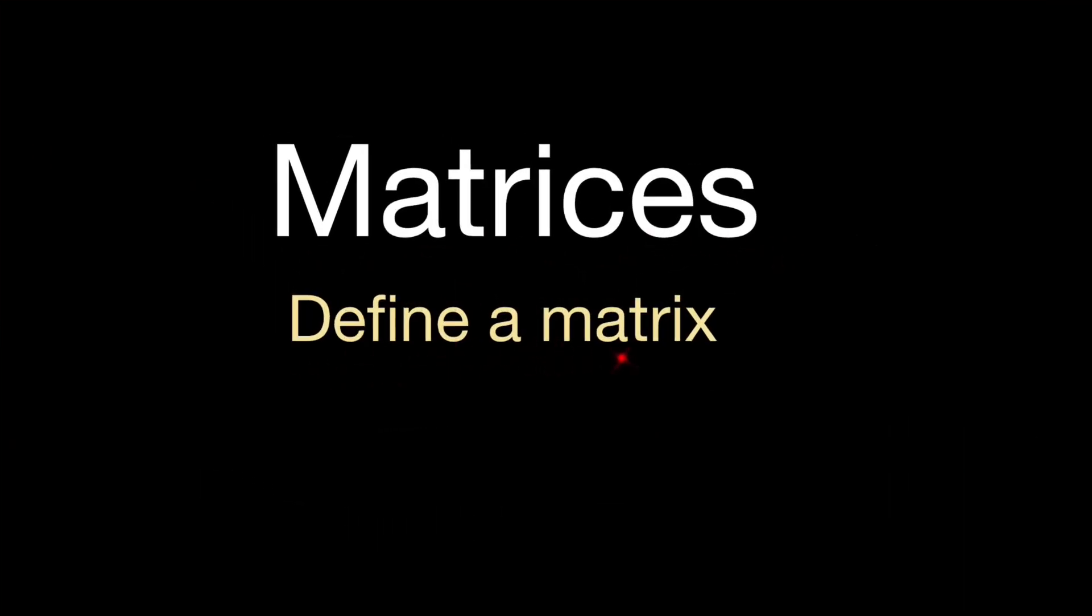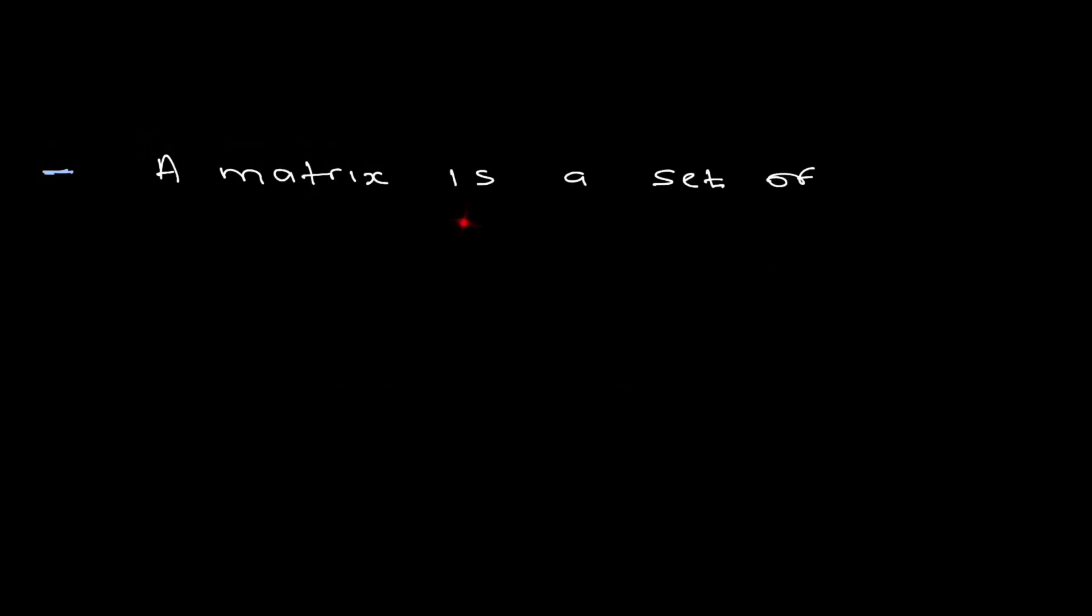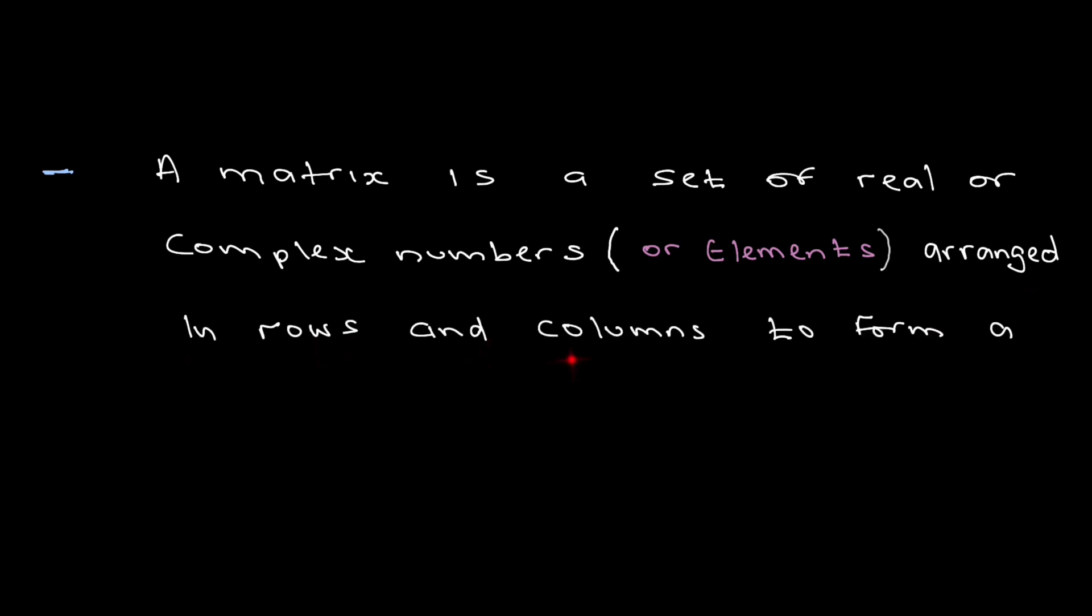Matrices. Define a matrix. A matrix is a set of real or complex numbers, and these complex numbers and real numbers are the elements of the matrix arranged in rows and columns to form a rectangular array.